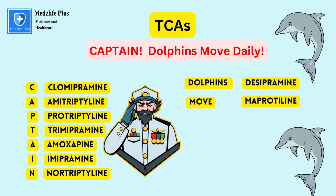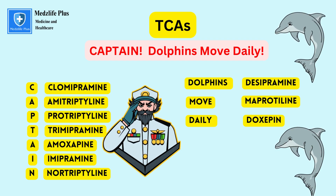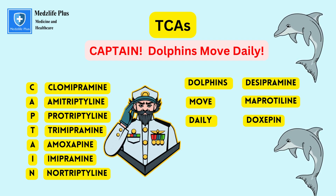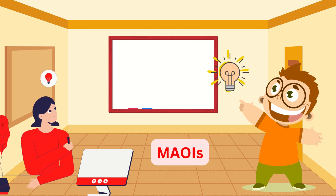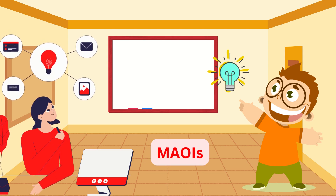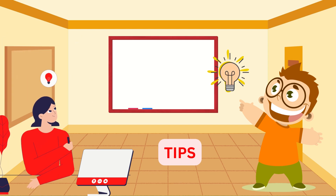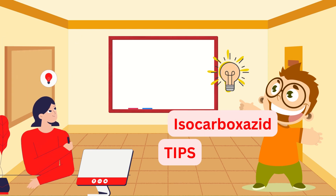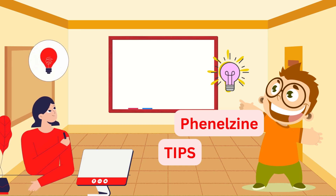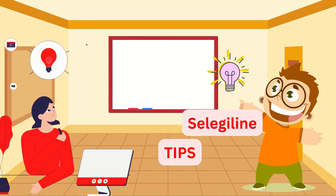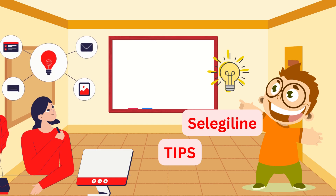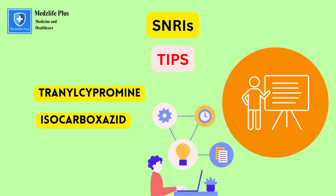Now let's learn the monoamine oxidase inhibitors. We'll use a short mnemonic: TIPS. T for tranylcypromine, I for isocarboxazid, P for phenelzine, S for selegiline.